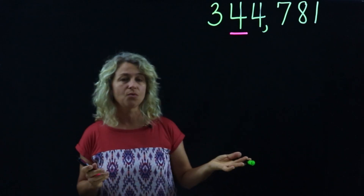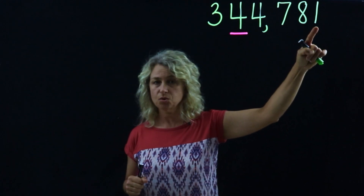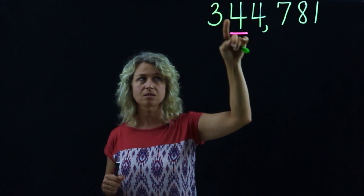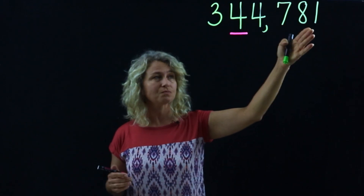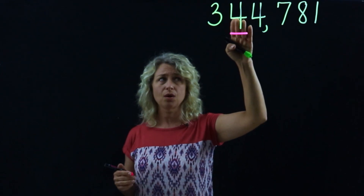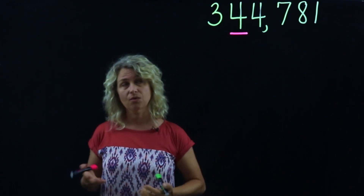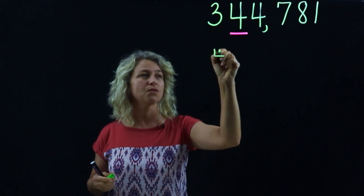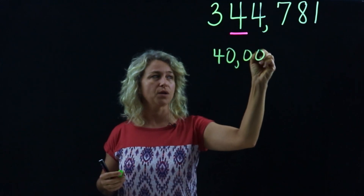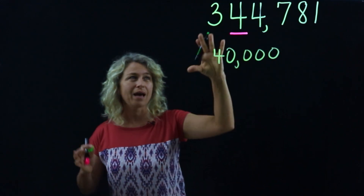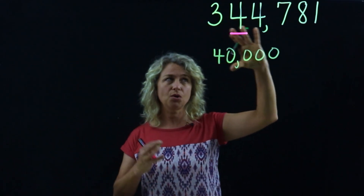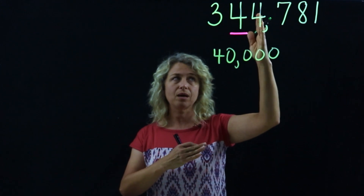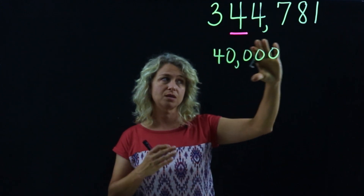If you remember place value, you know that this is your ones place, tens, hundreds, thousands, ten-thousands, hundred-thousands. Take a look at the underlined digit four. What is the value of that four? Well, you know that this is the ten-thousands place, so the value of the four is forty thousand. Now let's show you the actual scale of this digit being ten times the amount of the digit to the right.